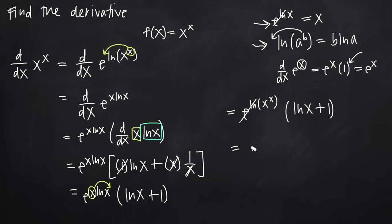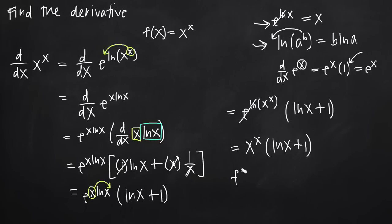So our final answer is x to the x multiplied by the quantity natural log of x plus one. This is the derivative with respect to x of x to the x. Our original function was f of x equals x to the x, and f prime of x equals x to the x times the quantity natural log of x plus one. That's how you find the derivative of x to the x.